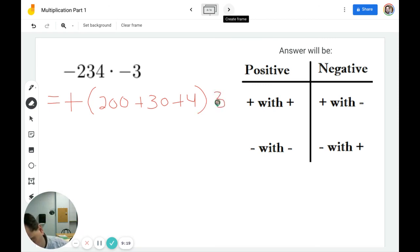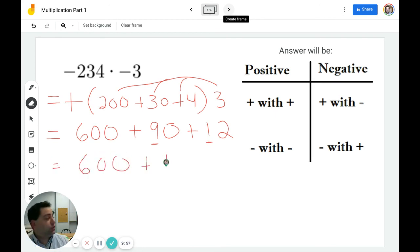So again, we're going to multiply each part. 3 times 2 is 6, and then that with two zeros, so 600. 3 times 3 is 9 with one 0. And 3 times 4 is 12. So as I'm writing here, we have 9 plus 1. So I know that this is going to be 600 plus 10 with a 2.